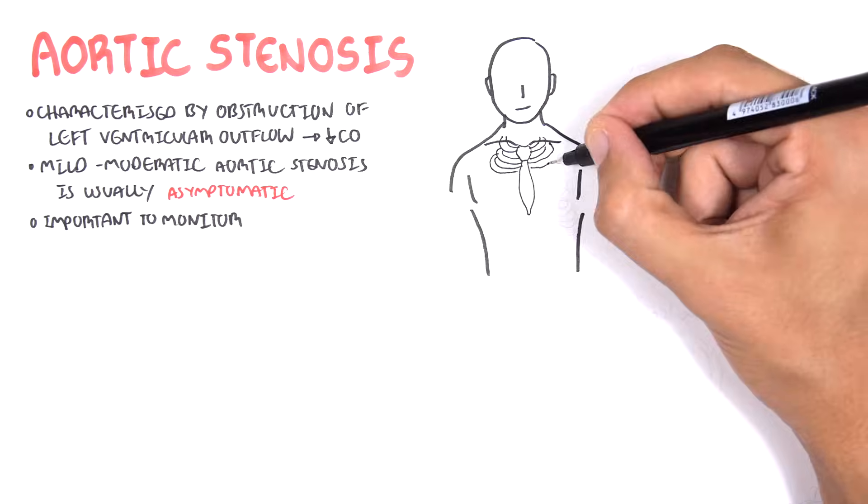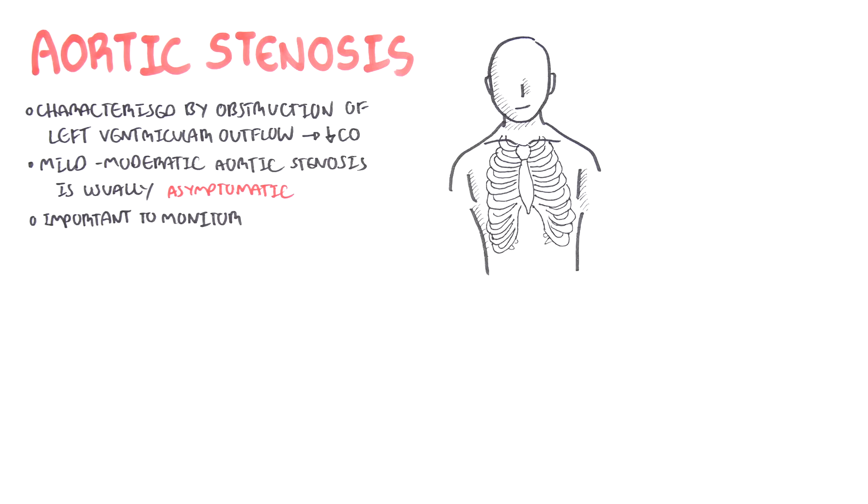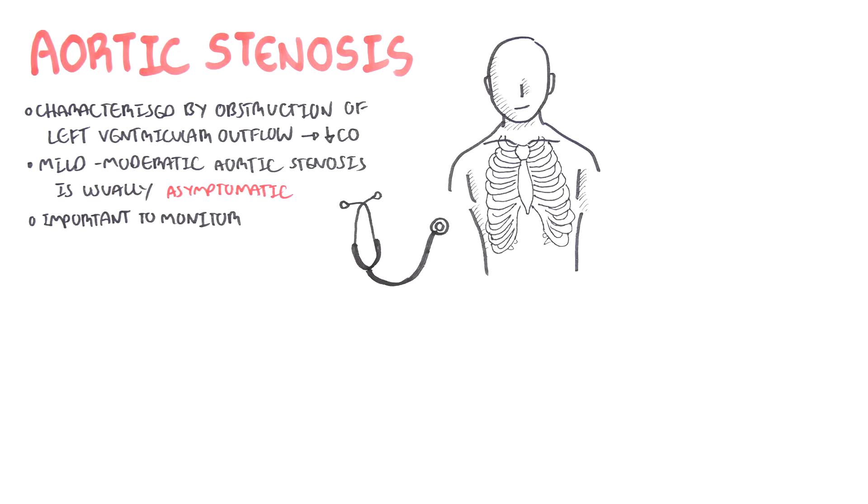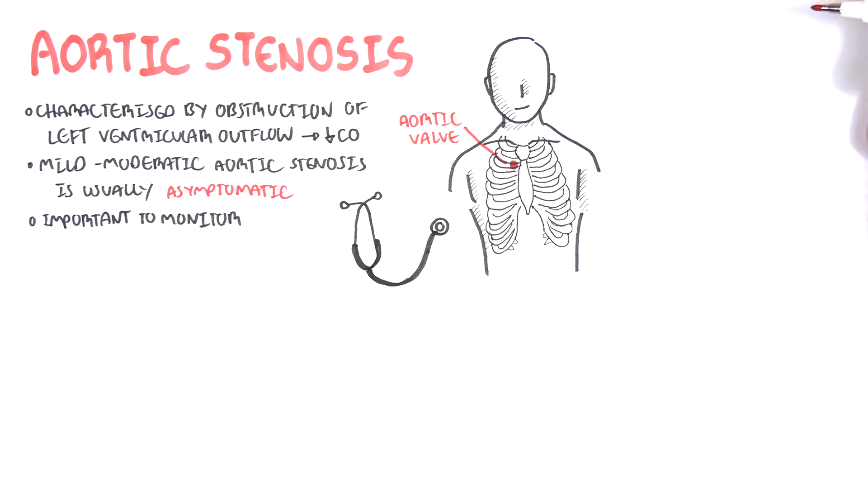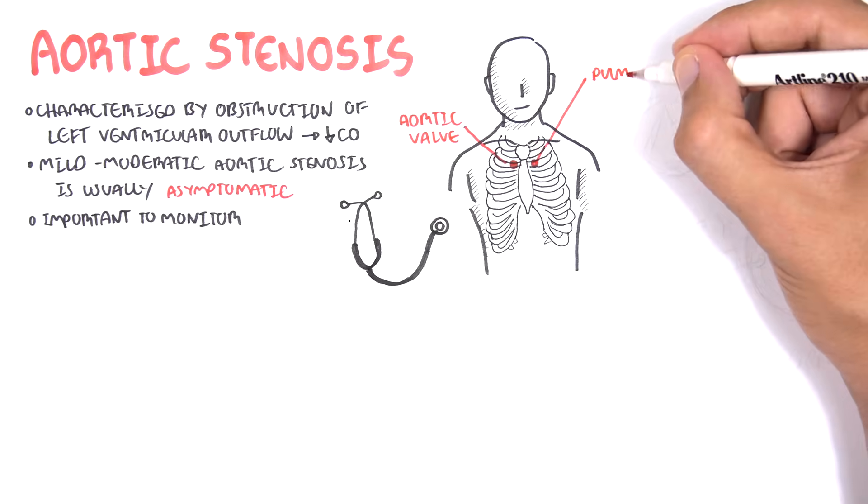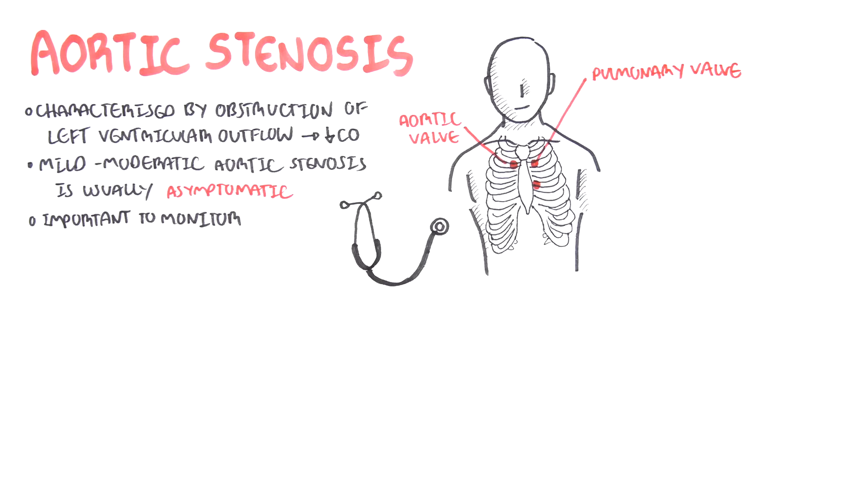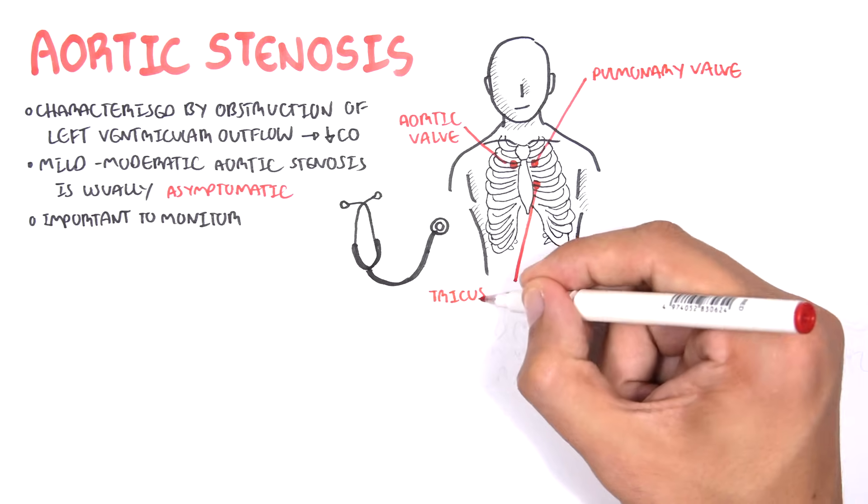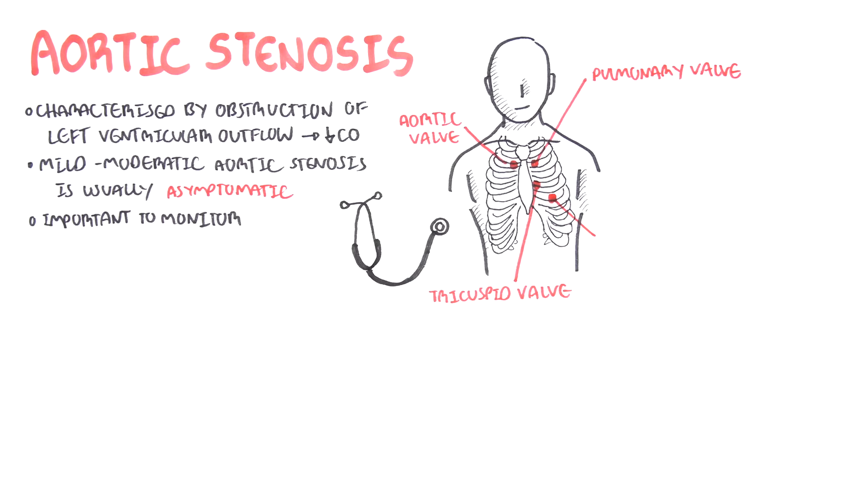All the valves of the heart can be heard most prominently in certain areas across our thorax. The aortic valve is best heard in the right second intercostal space parasternal. The pulmonary valve, left second intercostal space parasternal. The tricuspid valve, left fourth intercostal parasternal. And the mitral valve, left fifth intercostal space midclavicular.